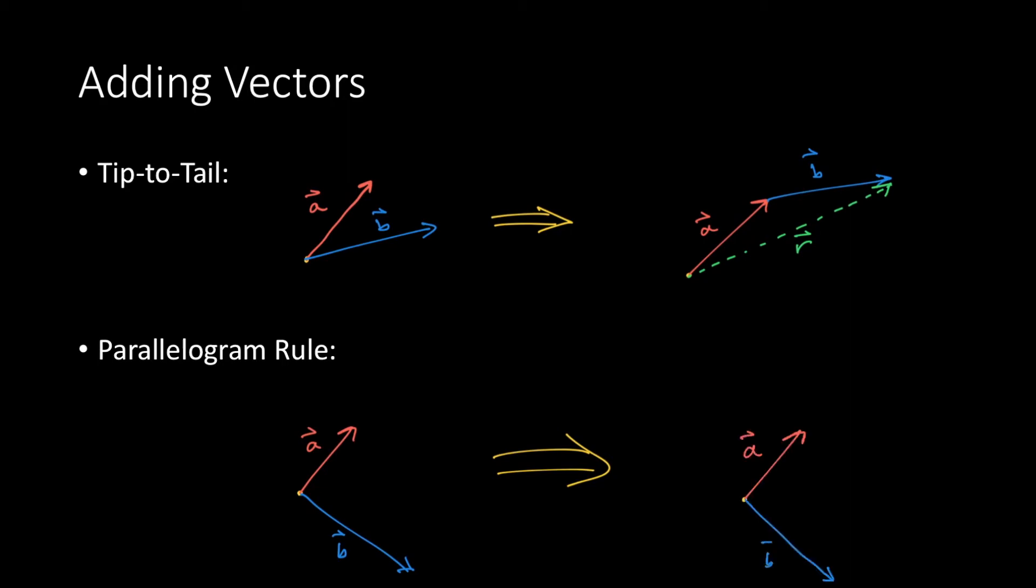Then, you draw lines parallel to the vectors to make a parallelogram, hence the name. The resultant starts at the base of the vectors and terminates at the opposite corner of the parallelogram.